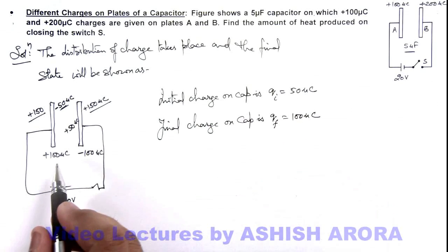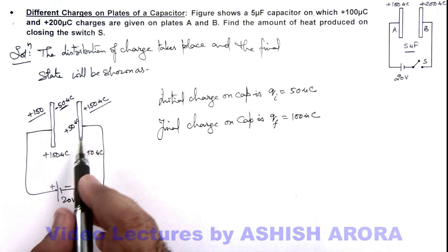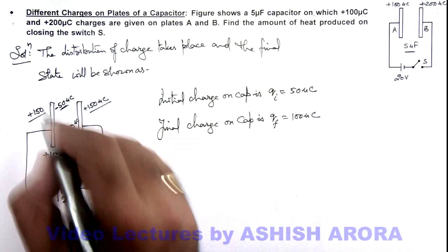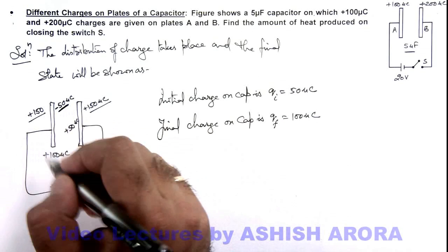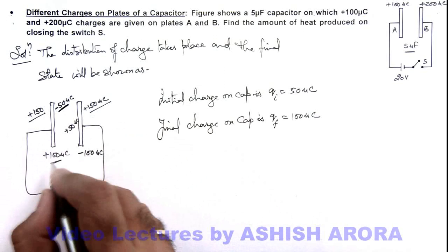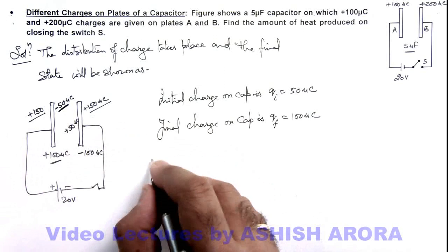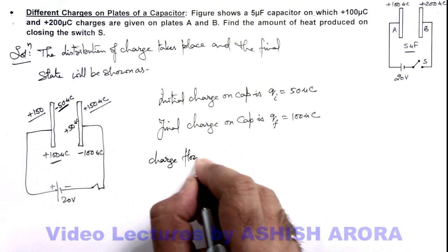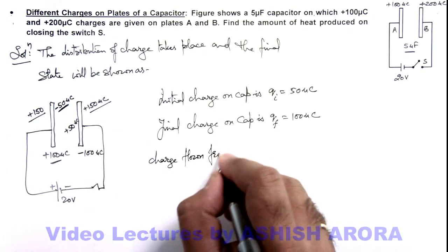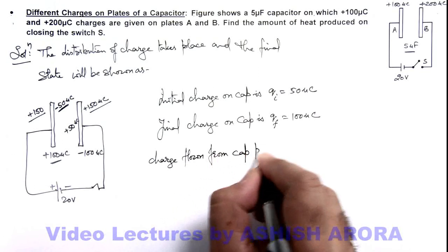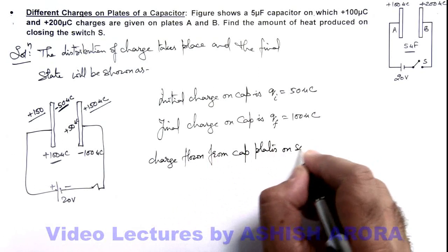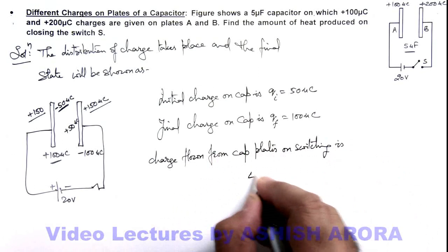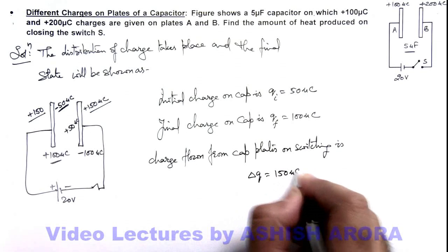But if we calculate the amount of charge flown through the circuit or change in charge on the capacitor plates, it will not be Qf minus Qi, because earlier it was of another sign and finally the sign also got changed. So here we can write charge flown from capacitor plates on switching is this delta Q, which can be given as 150 microcoulombs.